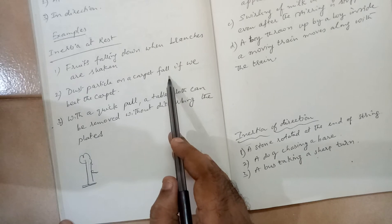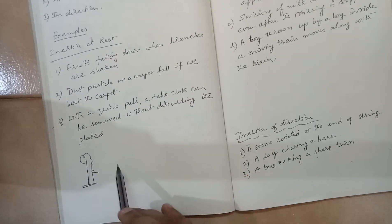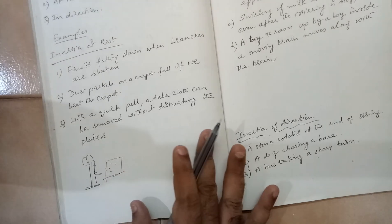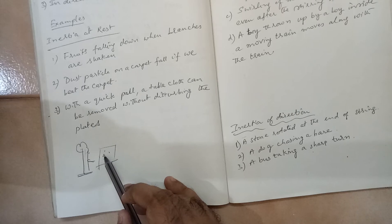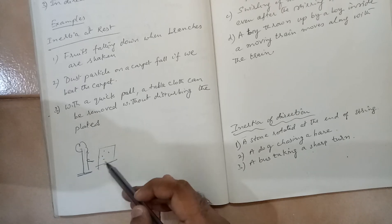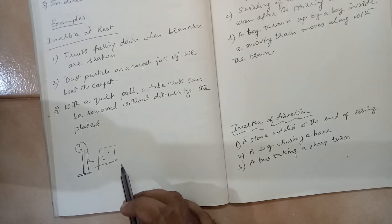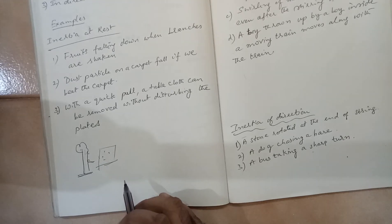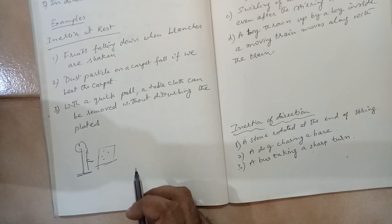Second example: dust particles on a carpet fall if we beat the carpet. The dust particles and the carpet are both at rest. But when you start beating the carpet, the carpet moves violently while the dust particle remains at rest. So the dust particle appears to rise in the air and then fall down.